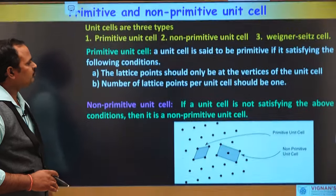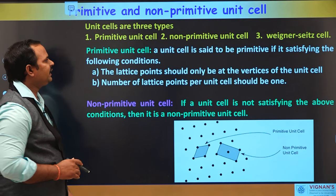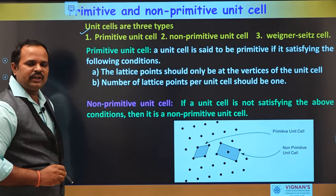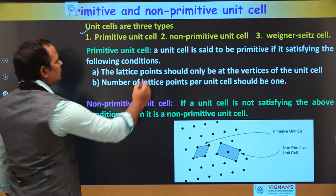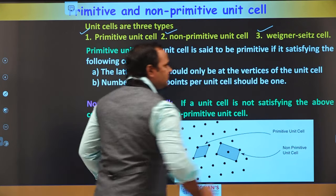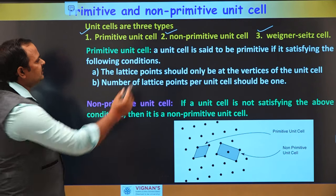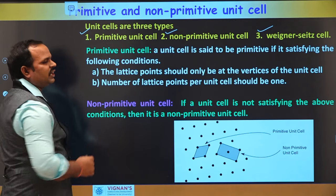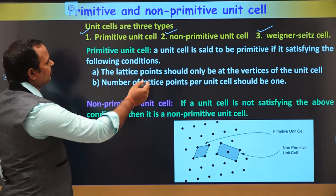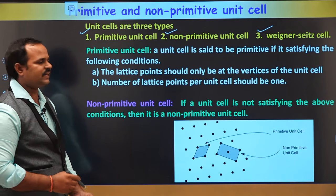There are three types of unit cells: the primitive unit cell, the non-primitive unit cell, and the Wigner-Seitz cell. The Wigner-Seitz cell and primitive cell are almost the same, and we won't discuss the Wigner-Seitz cell much in this class. We will discuss the primitive and non-primitive unit cells.